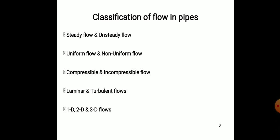Incompressible flow is that type of flow in which the density remains constant, whereas compressible is that type of flow in which the density may vary as per the material — for example, the density of mercury, oil, or water. Laminar and turbulent flows will be covered in depth in the next slides.